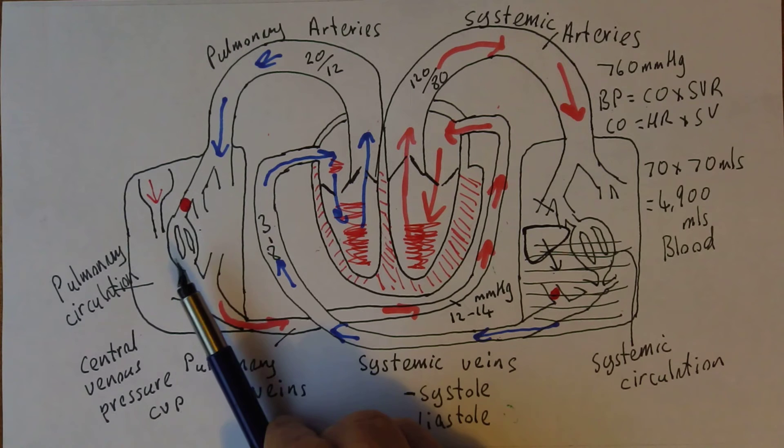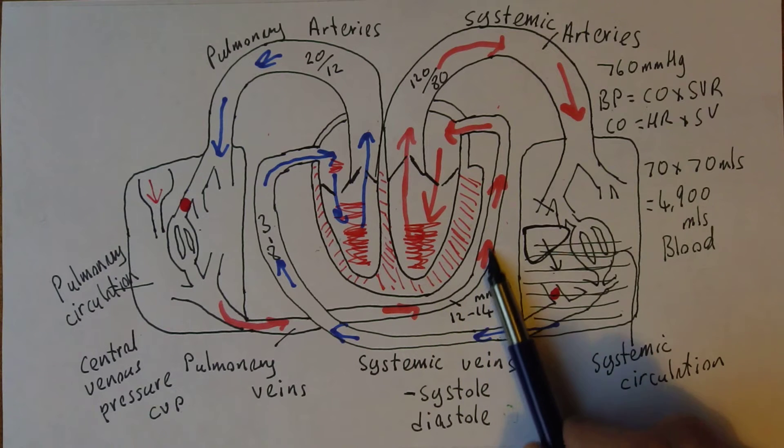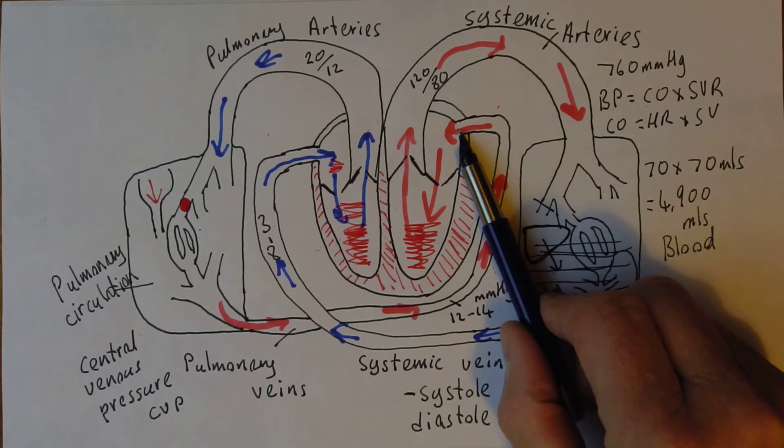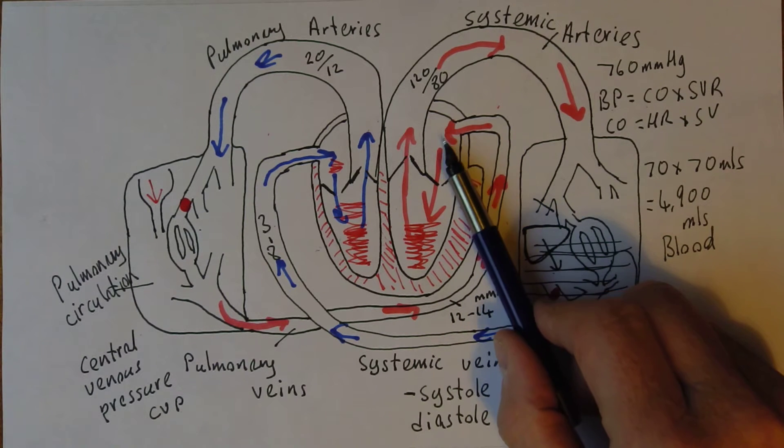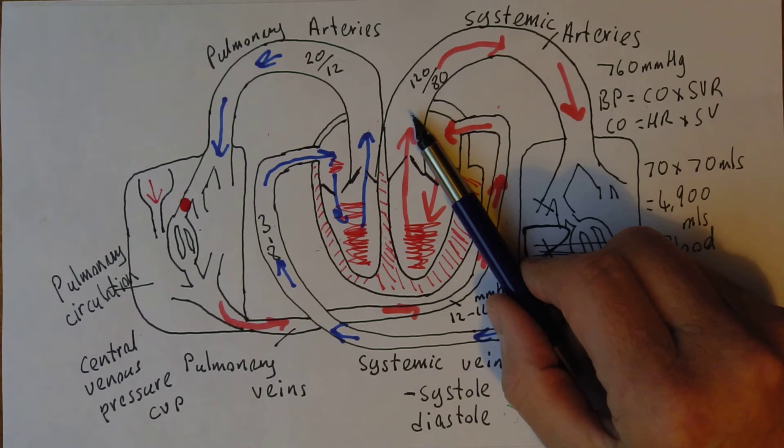Well the blood is draining from the lungs from the pulmonary circulation back through these pulmonary veins. Four pulmonary veins actually enter the left atrium. The blood from the left atrium goes through to the left ventricle and then out to the aorta.